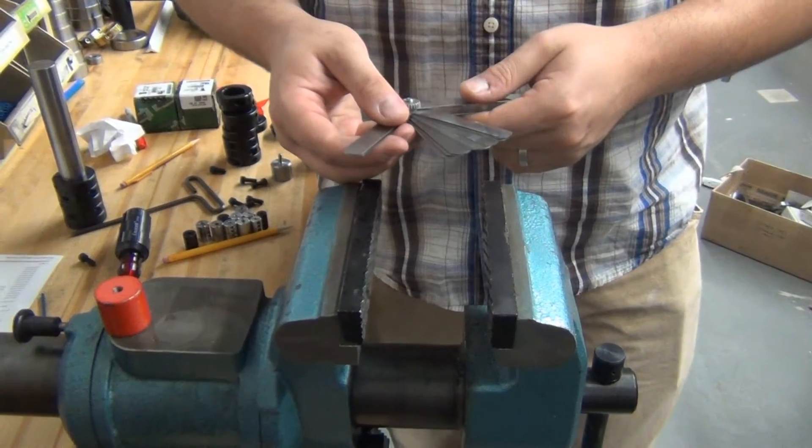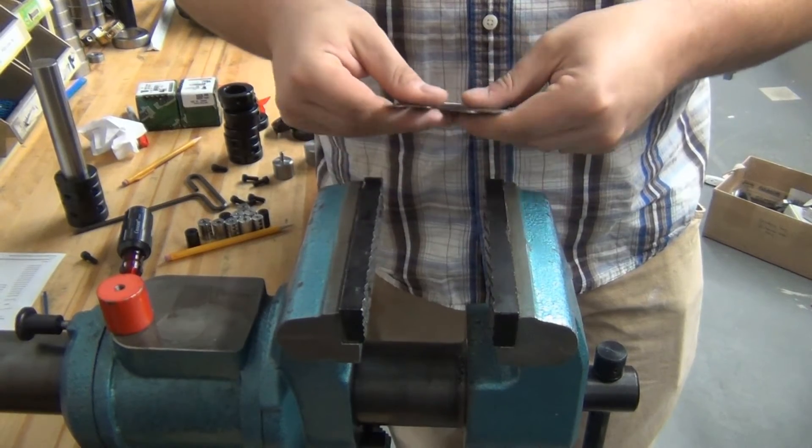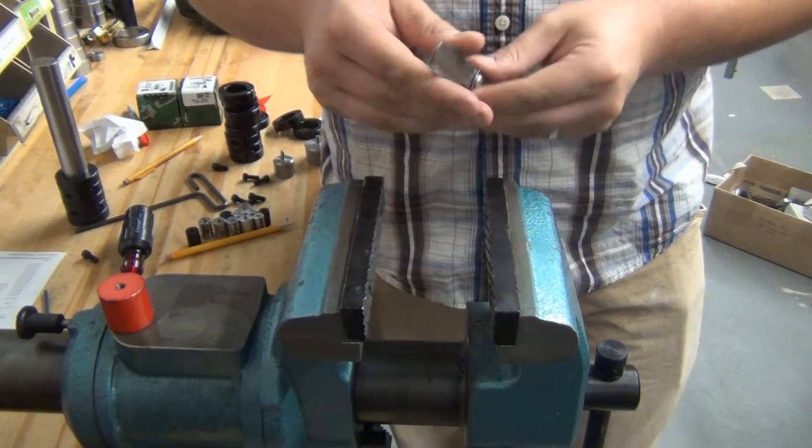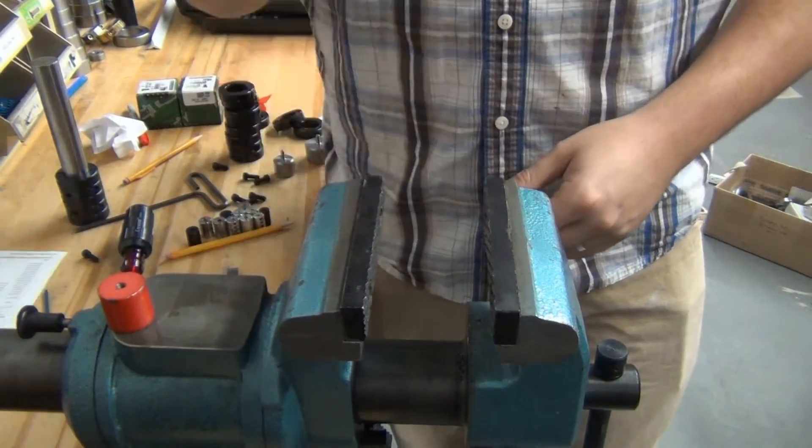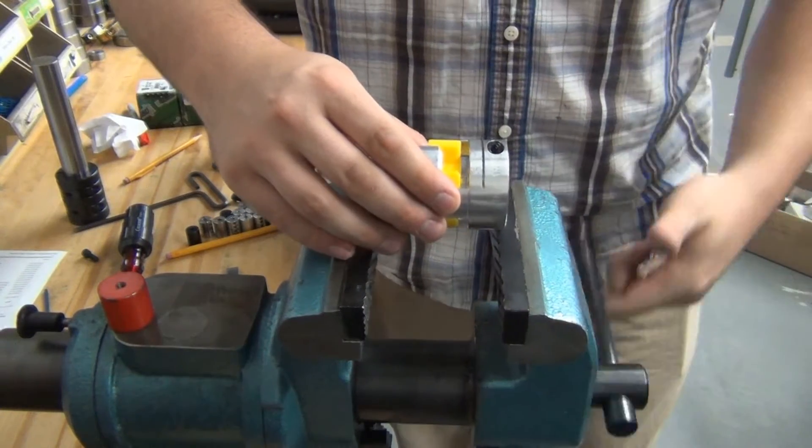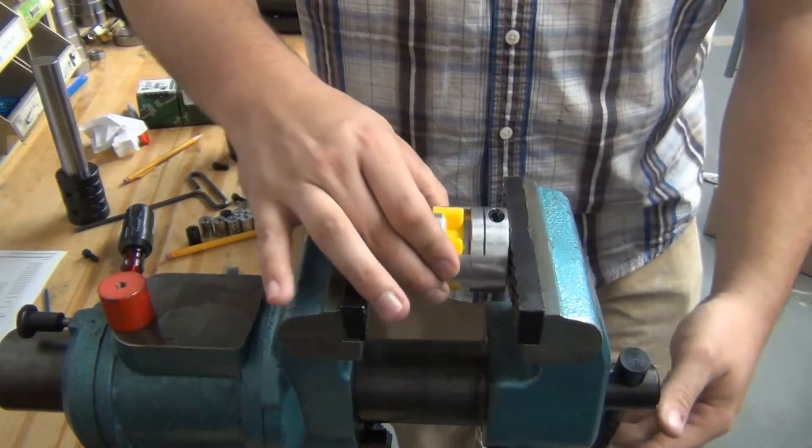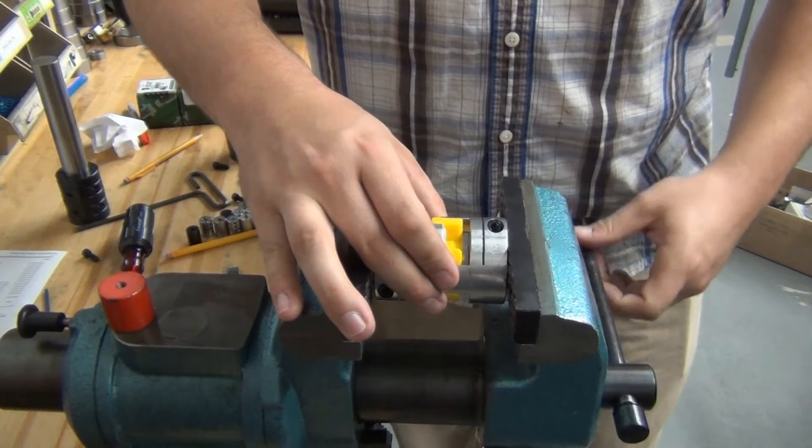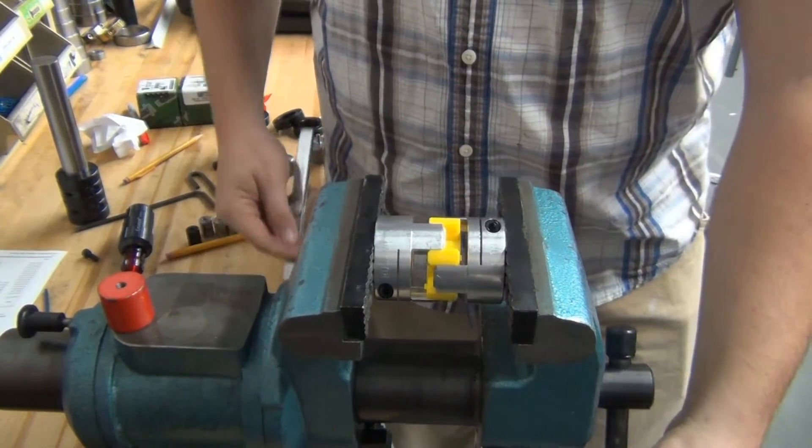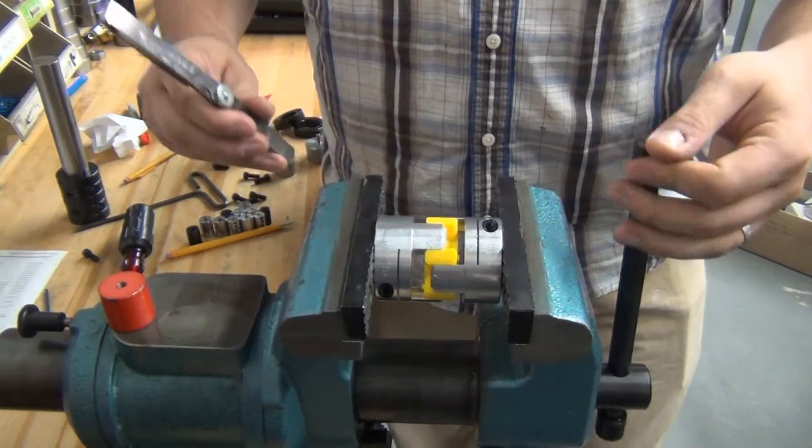To install the jaw coupling, we are going to need a feeler gauge which is set to the correct size, two hubs and a single spider, and a compression device. Place the semi-assembled jaw coupling into the compression device and tighten until the nubs on the spider are touching the base of the hubs.